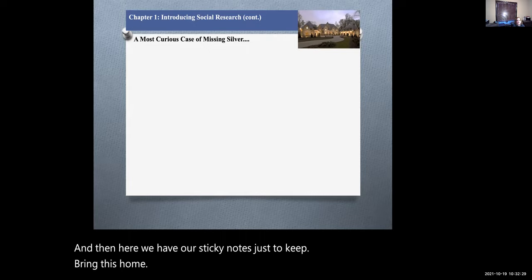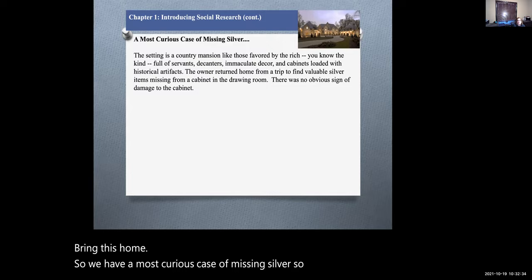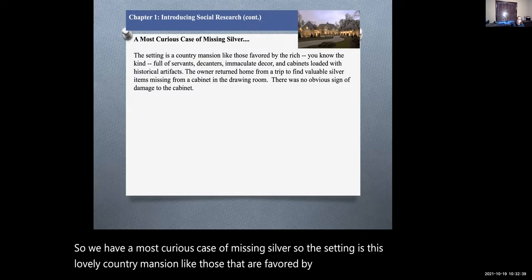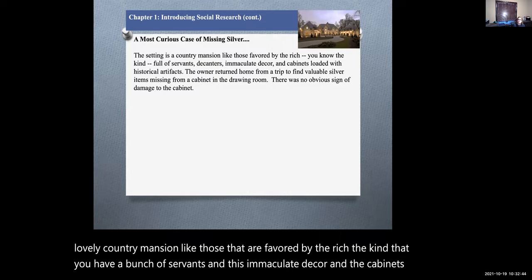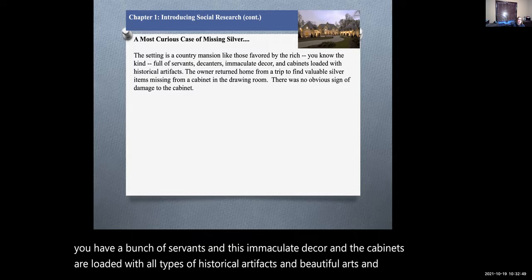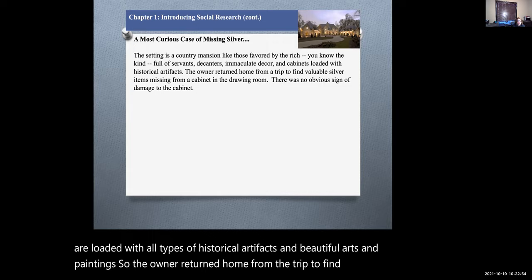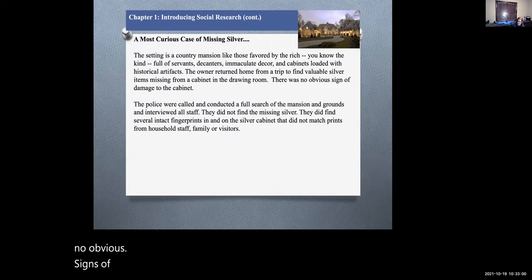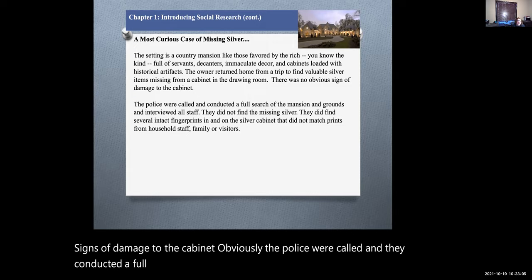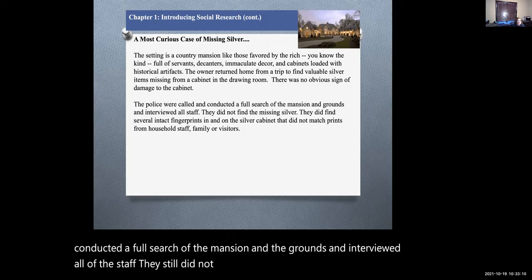Now we have a most curious case of missing silver. The setting is this lovely country mansion, like those that are favored by the rich, the kind where you have a bunch of servants and immaculate decor and the cabinets are loaded with all types of historical artifacts and beautiful arts and paintings. The owner returned home from a trip to find valuable silver items missing from the cabinet in the drawing room. There were no obvious signs of damage to the cabinet. Obviously, the police were called and they conducted a full search of the mansion and the grounds and interviewed all of the staff. They still did not find that missing silver.